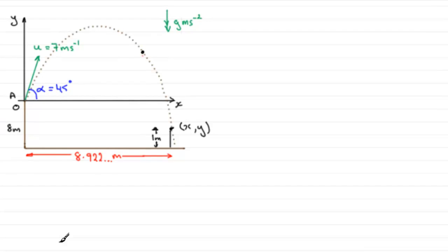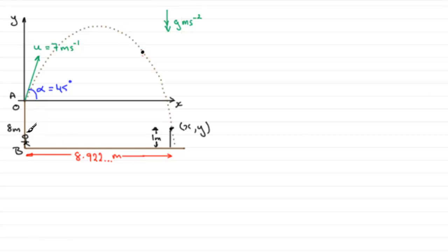For this last part of the question, I've updated the diagram from the previous part. We found out that when the ball was thrown and it was one metre above the beach, the horizontal distance was 8.922 metres. We're told that a boy stands directly below A — let's mark that position as B — and the ball is thrown. After 0.4 of a second, the boy starts running along the beach with a constant speed of V metres per second.